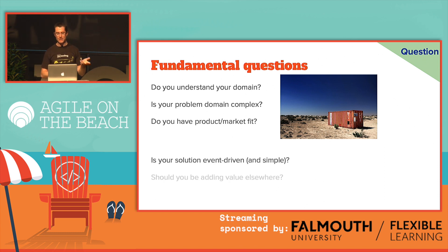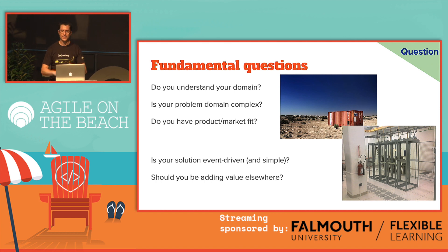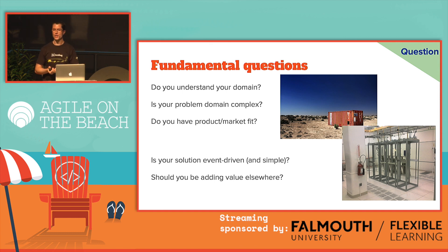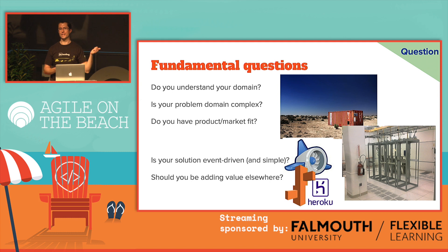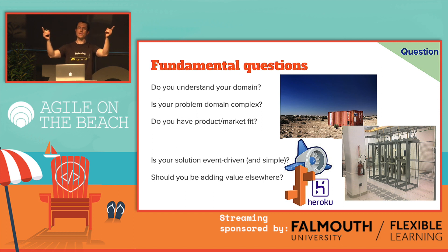If your solution is event-driven and really simple, perhaps you should be adding value elsewhere. Serverless is really popular and with good reason. Things like Lambda — there are a whole bunch of frameworks — they're kind of event-driven, very simple, well-defined platforms that cloud providers are giving us, allowing you to do proof-of-market or proof-of-concept stuff really fast. I'm a massive fan of App Engine. As a Java developer, App Engine gives you a subset of Java — you just write your code, package your app in a jar, ship it across, and Google handles all the operations stuff.